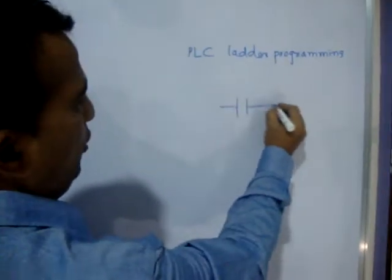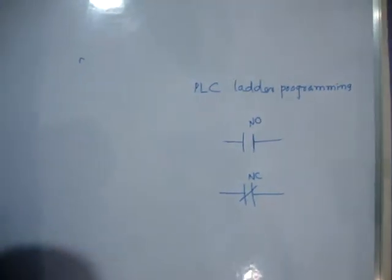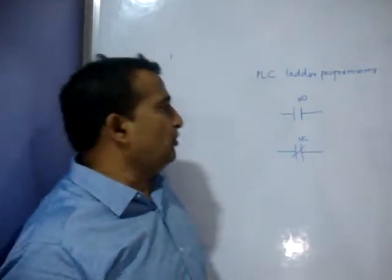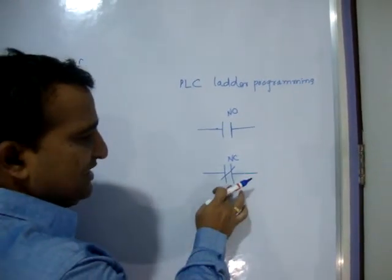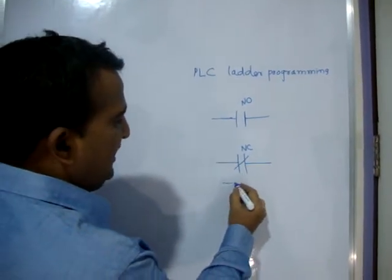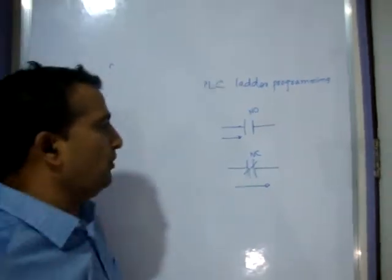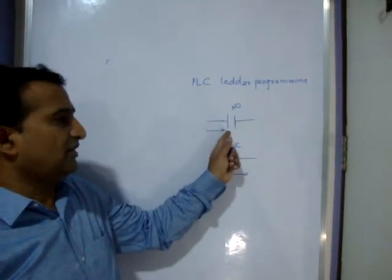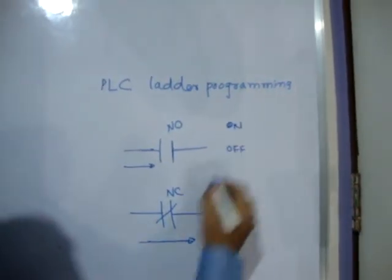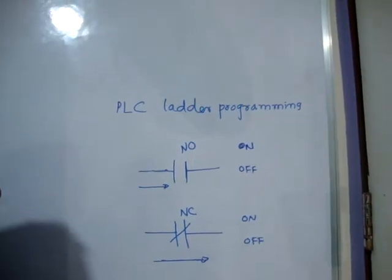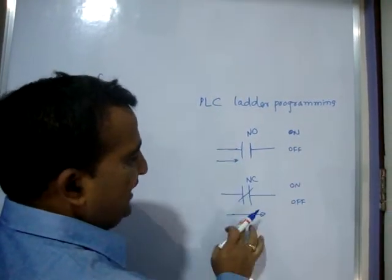In PLC ladder programming, this is called a normally open switch and this is called a normally closed switch. NO means normally open — whenever I press it, the current will flow; when I release it, the current stops. NC is the opposite: presently the current is flowing; when it is on the current flows, when it is off the current stops.